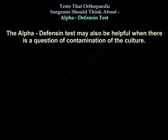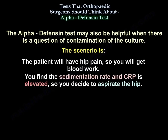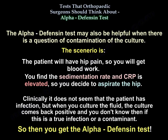The Alpha-Defensin test may also be helpful when there is a question of contamination of the culture. Here is the scenario: the patient will have hip pain, so you will get blood work — sedimentation rate and CRP — and find them elevated, so you decide to aspirate the hip. Clinically it doesn't seem that the patient has infection, but when you culture the fluid the culture comes back positive. Then you don't know if this is a true infection or a contaminant, so you get the Alpha-Defensin test.